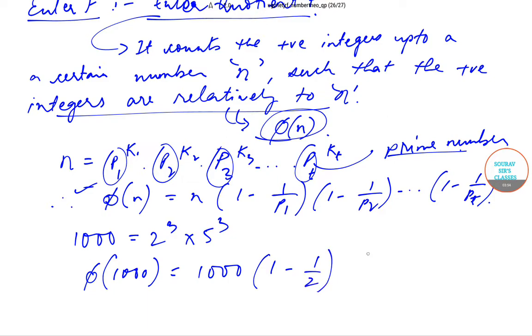Then if this is the number that we'll be getting, we can write that phi(1000) will be basically equal to 1000 × (1 - 1/2) × (1 - 1/5). So this will be equal to 1000 × 1/2 × 4/5, so this comes down to 2000/5, which is equal to 400.